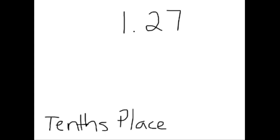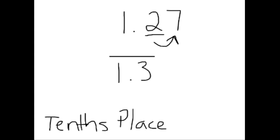To the tenths place. First thing you need to do is mark where the tenths place is. Now you can look to the right — the seven actually tells you what to do with the two. It's about five, so we're going to round it up. Rounding to the tenths place turns this into 1.3.